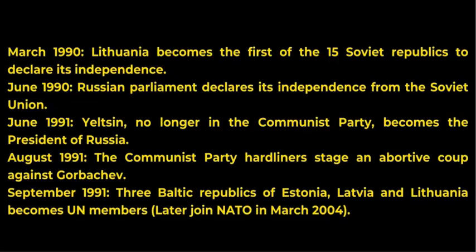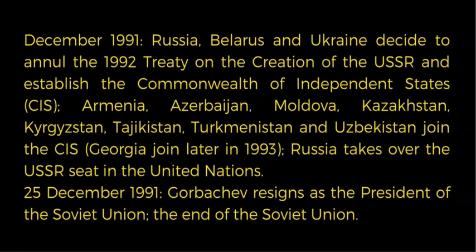August 1991 — Communist Party hardliners stage a coup against Gorbachev. September 1991 — The three Baltic Republics of Estonia, Latvia, and Lithuania become United Nations members, and later join NATO in March 2004. December 1991 — Russia, Belarus, and Ukraine decide to annul the 1922 treaty on the creation of the USSR and establish the Commonwealth of Independent States (CIS).